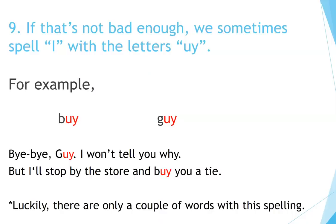Number 9. If that's not bad enough, we sometimes spell I with the letters U-Y. For example: buy, guy. Bye-bye guy, I won't tell you why, but I'll stop by the store and buy you a tie. Luckily, there are only a couple of words with this spelling.